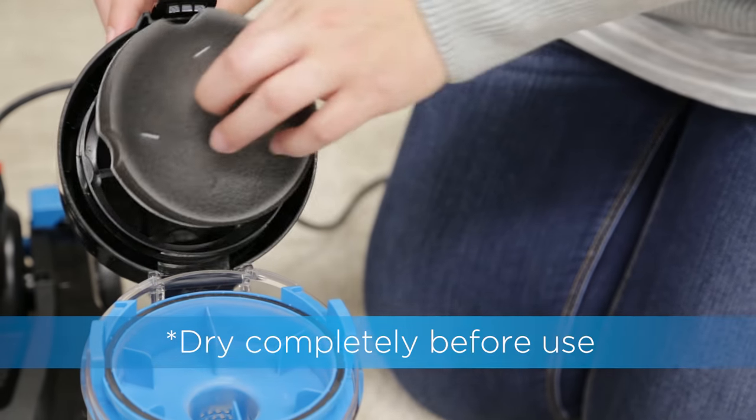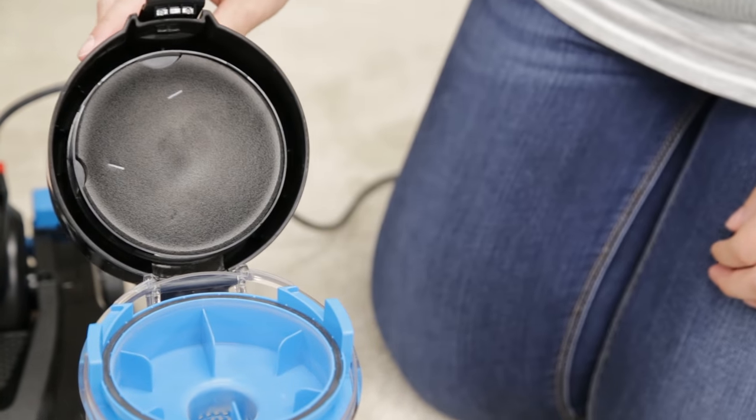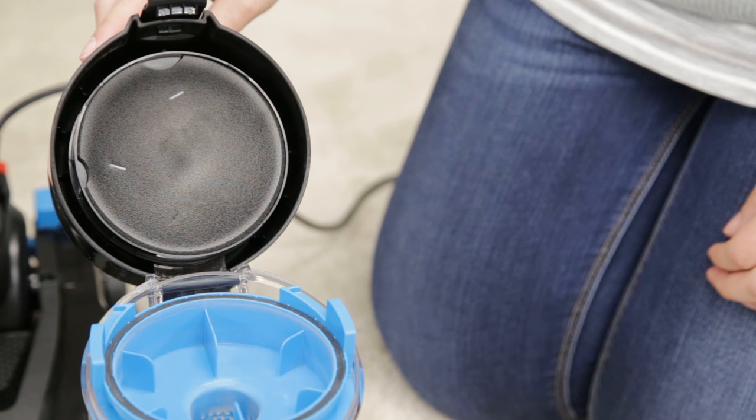Once completely dry, place the filter back in the dirt container lid. The white mesh side should be put in first with the black foam side still visible.